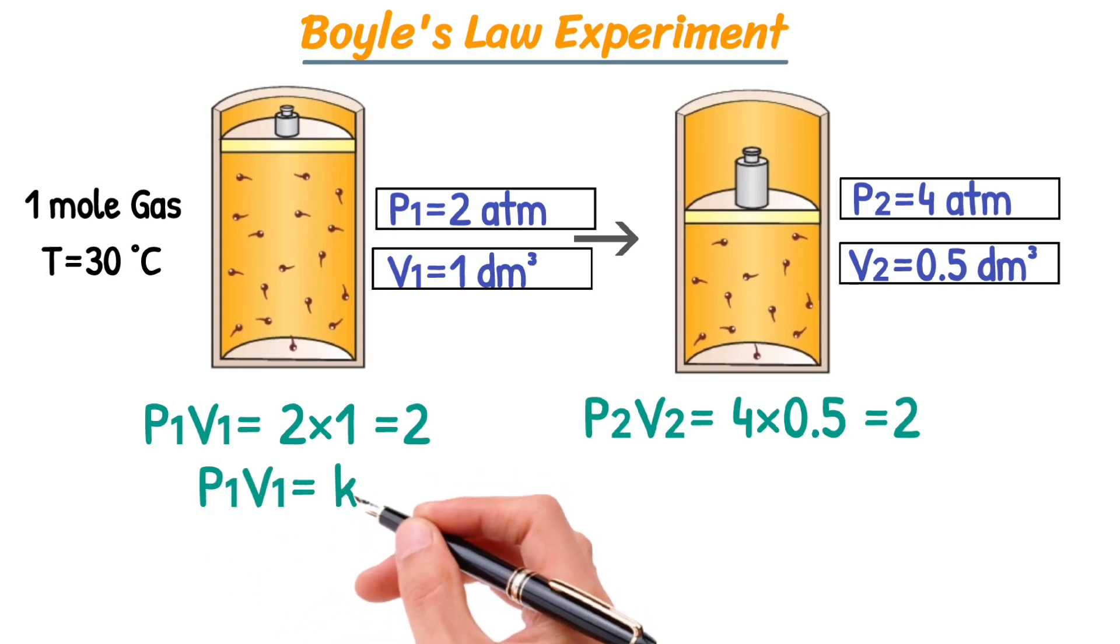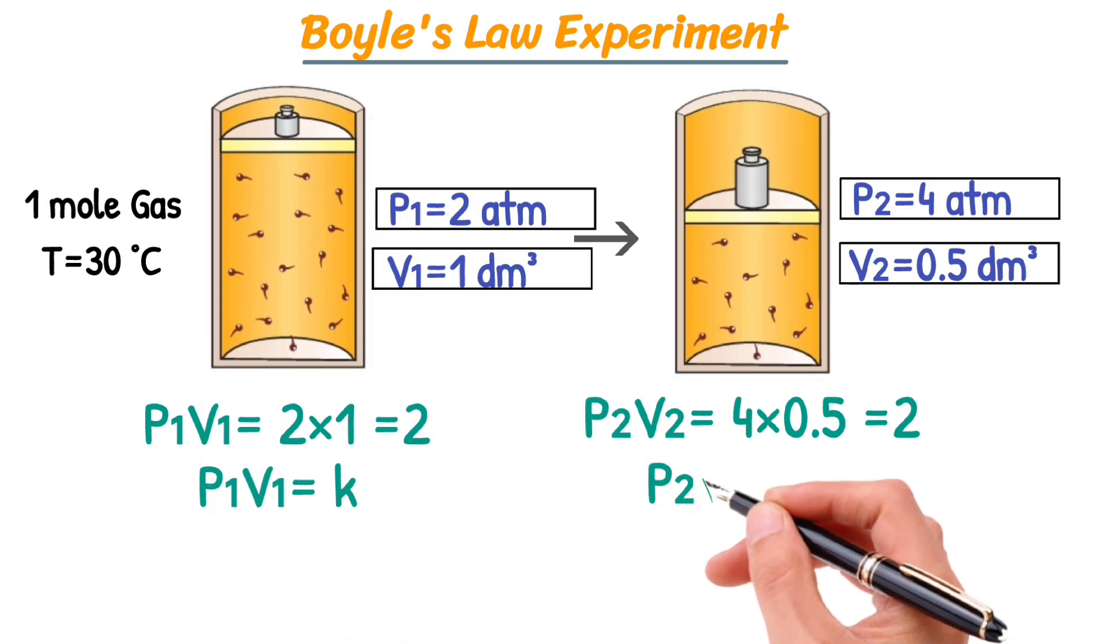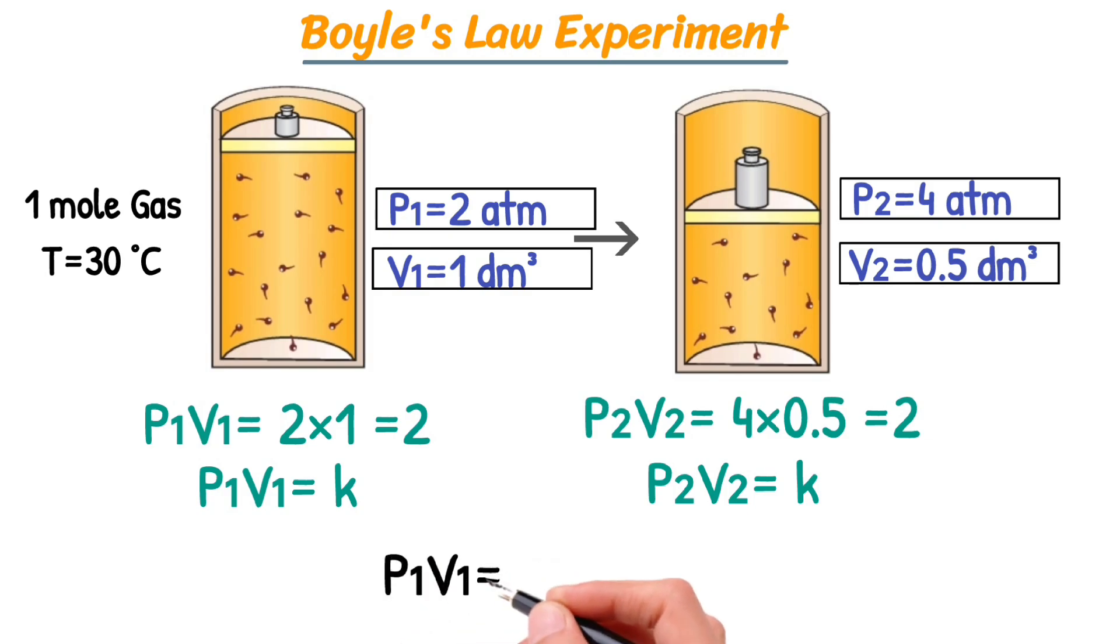As both equations have the same constant, therefore their variables are equal to each other. Also, we can write as P1V1 is equal to P2V2. This equation establishes the relationship between pressure and volume of the gas.